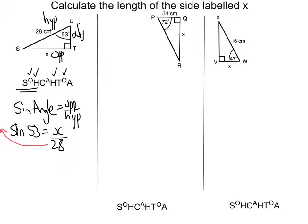And I'm going to move it by timesing both sides by 28. This way, I'm going to get x on its own. So this leaves me with x is equal to 28 times sine 53.